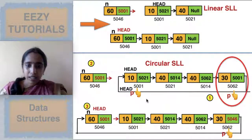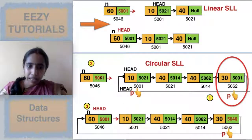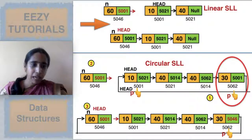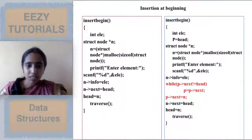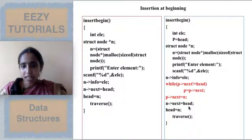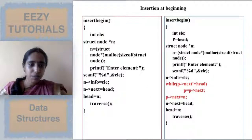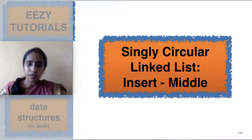Then you can make the connection: n->next equals head, then set head equal to n itself. So n->next equals head, head equals n. With that, insertion at the beginning is complete.